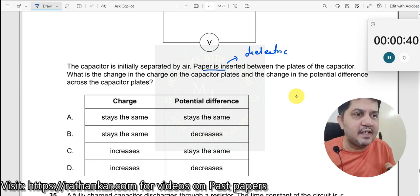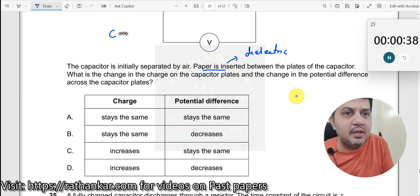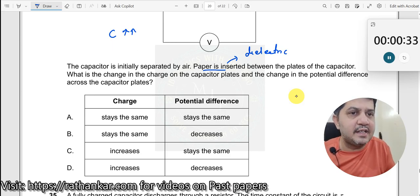Now, when you insert a dielectric in the capacitor, what will happen? The value of C will increase. And what will happen to the charge? Charge will also increase. Why charge will increase?